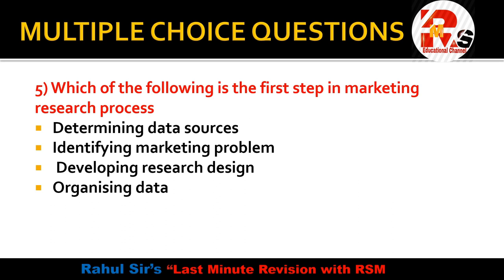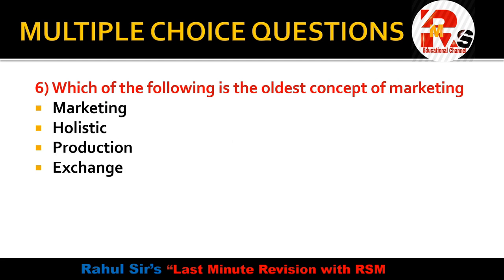Question number 5: Which of the following is the first step in the marketing research process? Options are: Determining data sources, Identifying marketing problem, Developing research design, or Organizing data. The first step is Identifying the marketing problem. If you don't identify the problem first, how will you proceed with research design, data sources, etc.?